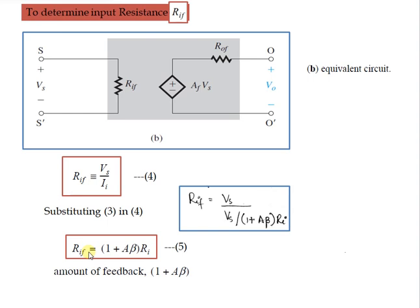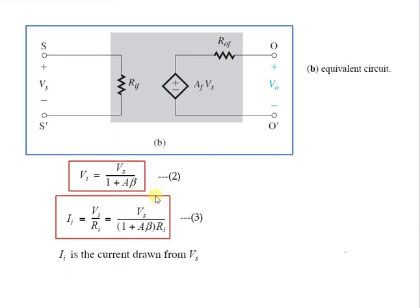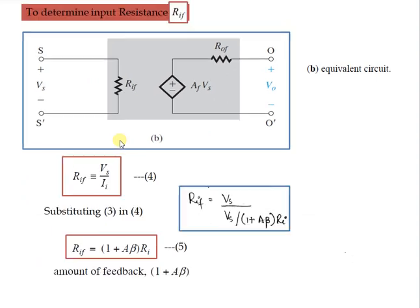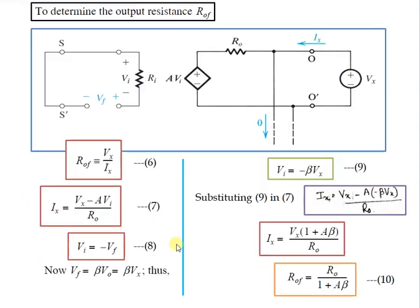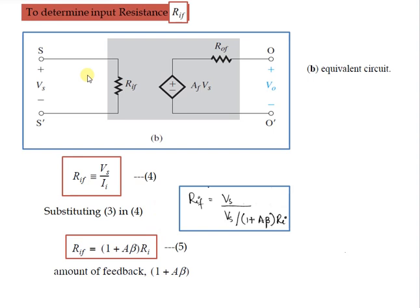Therefore, the series mixing at the input results in an increase in the amplifier input resistance by a factor of 1 + A·beta, which is one of the desirable properties of the voltage amplifier.